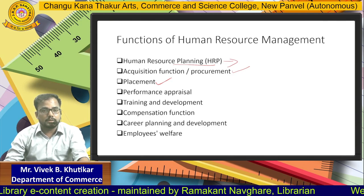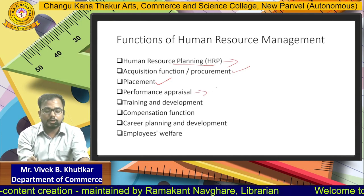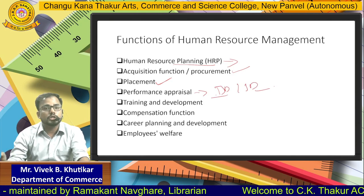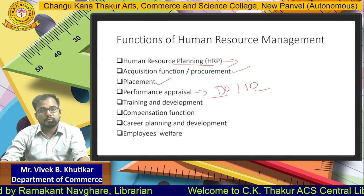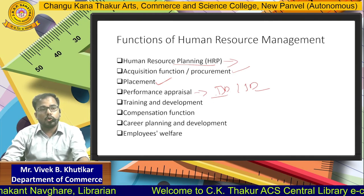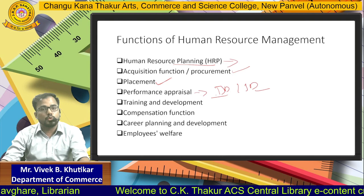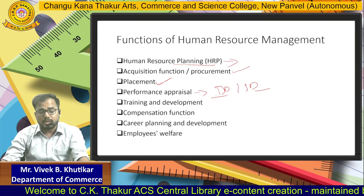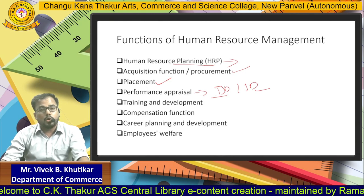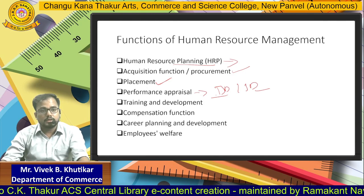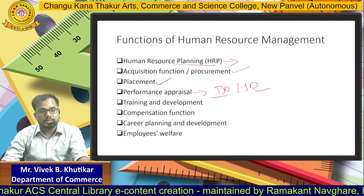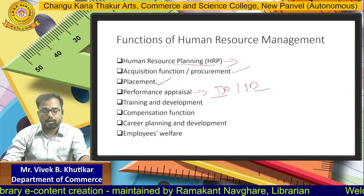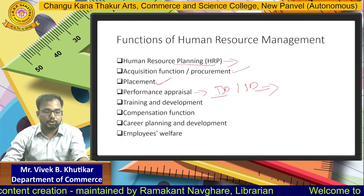The next function is performance appraisal, which can be done with the help of JD and JS. JD, or job description, is a written statement indicating all details of the job — roles and responsibilities, salary, reporting managers, working hours, etc. JS specifies the particular qualities, knowledge, and experience required to perform the tasks mentioned in the JD.